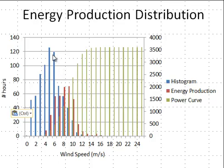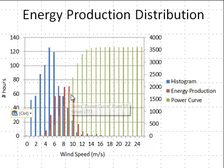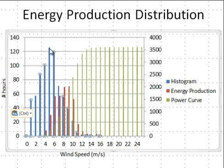Whereas the most prevalent wind speeds were back here at about five meters per second. This shift is a combination of the power curve shape and the fact that power in the wind is a function of the cubic velocity — so there's usually a higher wind speed that gives the most power output than the one that is most prevalent.